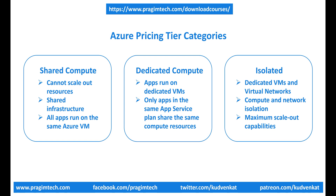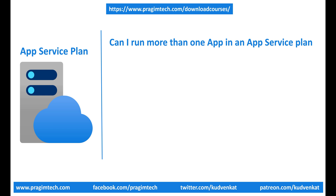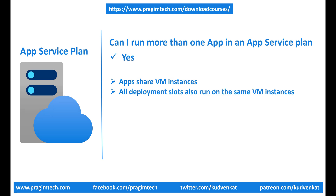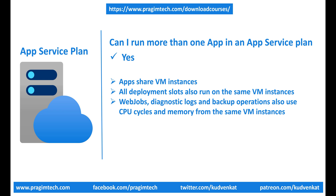When I was learning App Service Plans and pricing tiers, one of the questions I had was: can I run more than one app in an App Service Plan? The straight answer is yes, but keep in mind that if multiple apps are in the same App Service Plan, they all share the same VM instances. If you have multiple deployment slots for an app — maybe a staging and production slot — all those deployment slots also run on the same VM instances. Similarly, if you run web jobs, enable diagnostic logs, or perform backups, they also use CPU cycles and memory on these VM instances.